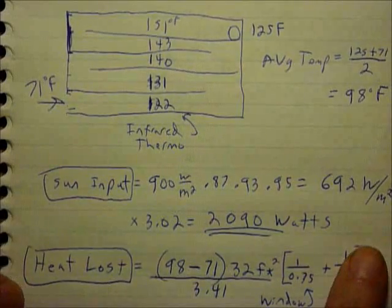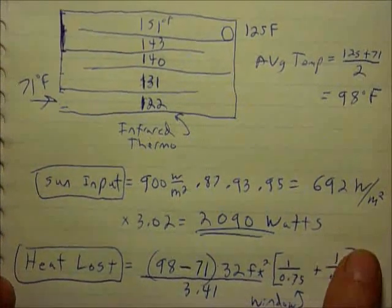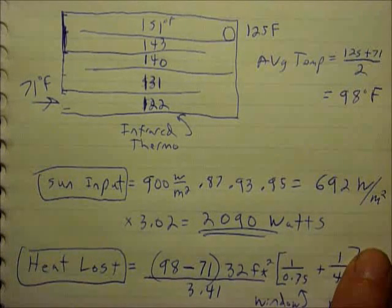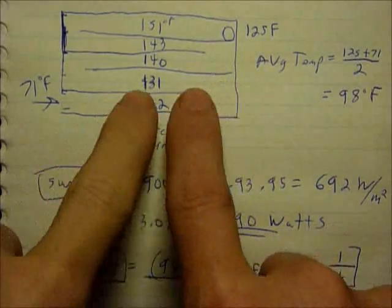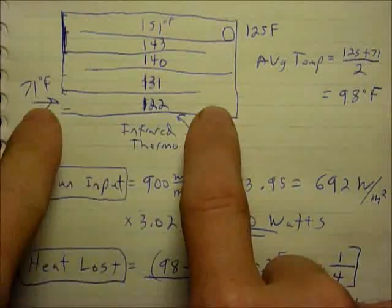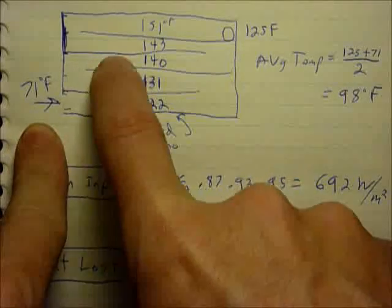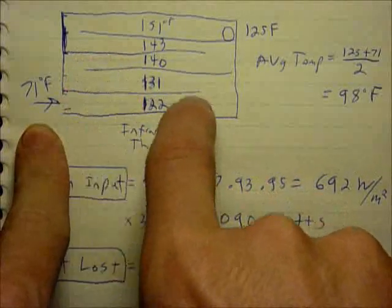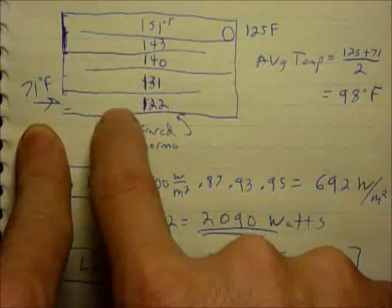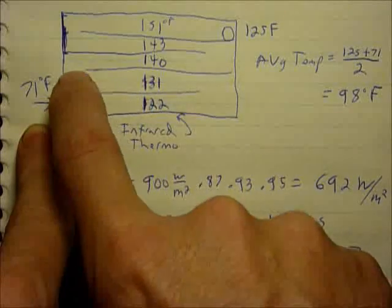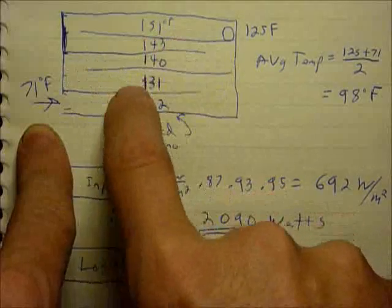This is an example calculation for the energy input and output to a solar air heater. This is a 4 by 8 with five turns or channels to speed up the airflow so that more heat is extracted off the black back of the surface.